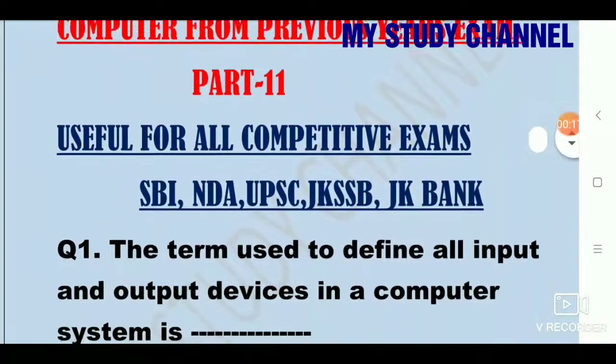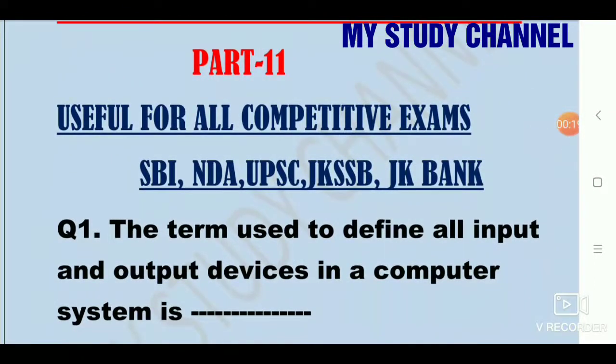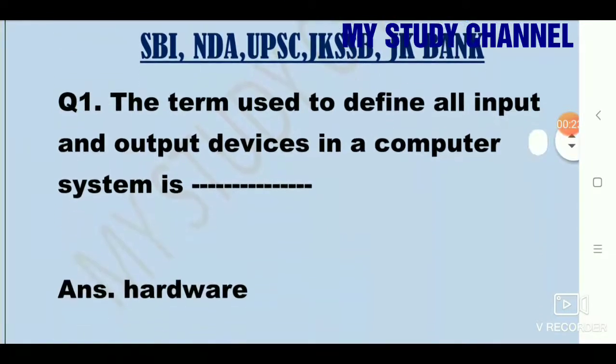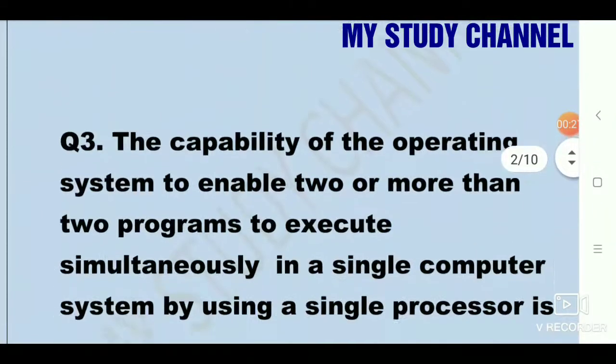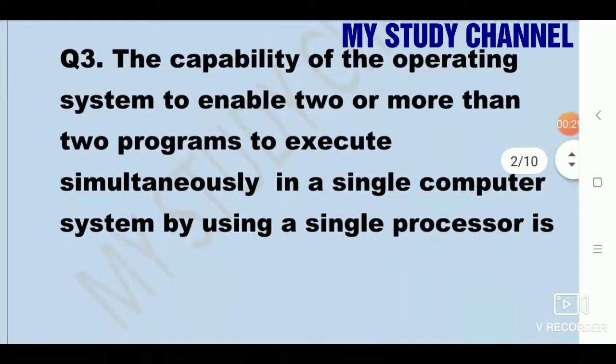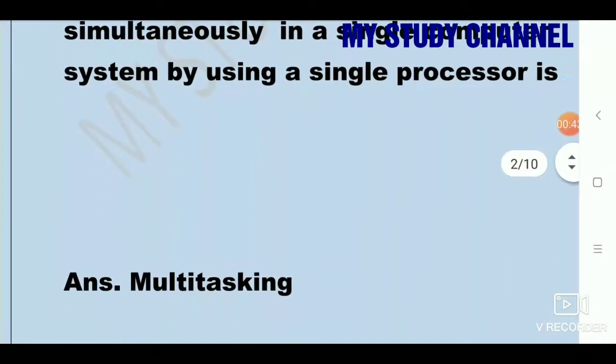Question number 1, the term used to define all input and output devices in a computer system is? Answer is hardware. Next question, the capability of the operating system to enable two or more programs to execute simultaneously in a single computer system by using a single processor is? Answer is multitasking.